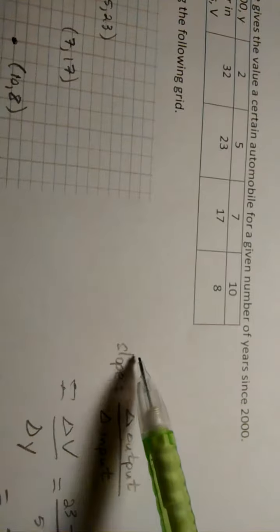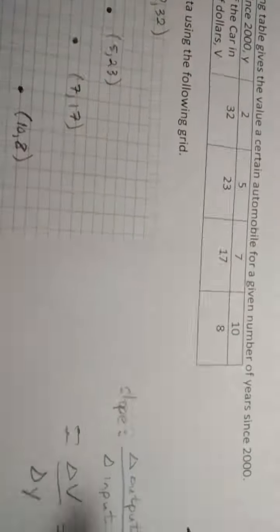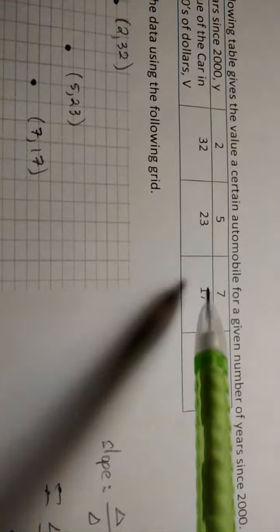So the slope and the average rate of change for these lines that are produced actually have the same value. But let's take a look at this. So we would take from 5 to 10 here, this is what we're going to do.